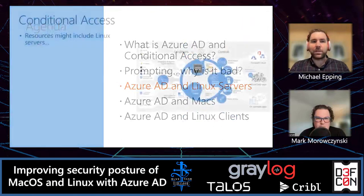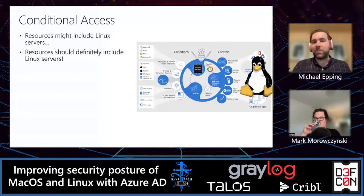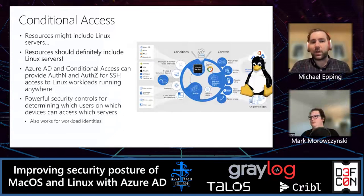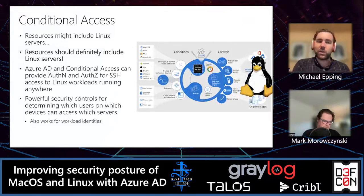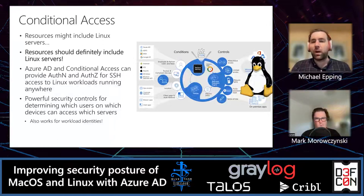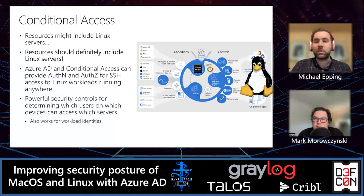Now Michael is going to talk about what we can do on the Linux server side. Let's talk about turning Linux servers into a resource protected by Conditional Access. Linux servers should definitely be considered resources requiring zero-trust policies. In Azure AD, we have the capability to protect SSH access to Linux servers with Conditional Access and other Azure AD tools — including requiring compliant devices, MFA, passwordless sign-in methods, and Privileged Identity Management so users don't have standing access.